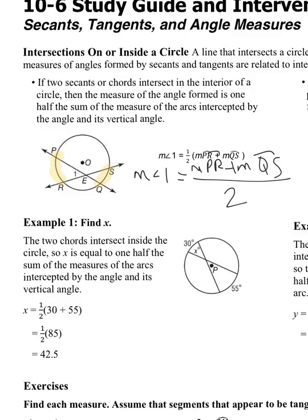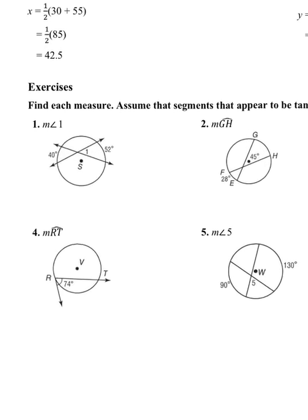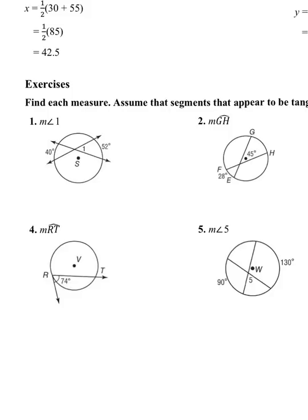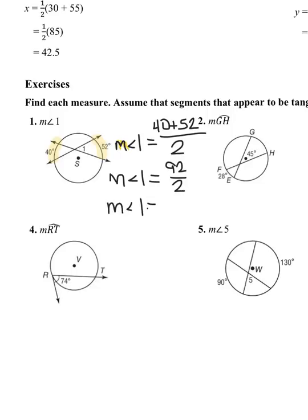We're going to have some practice with those — that's two secants that intersect inside a circle. For question number one, which is two secants intersecting inside a circle, we have to find the two arcs. I have the first arc and the vertical angle arc; I'm going to add those up and divide by two. So the measure of angle one equals the sum of the arcs divided by two, which is 46 degrees.